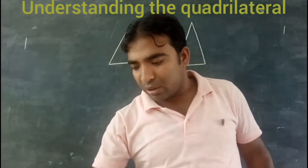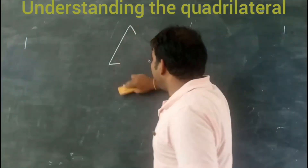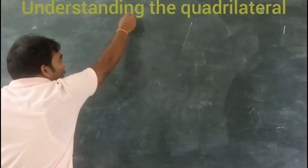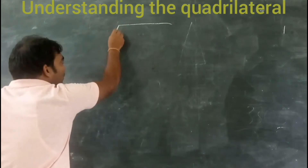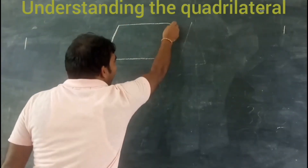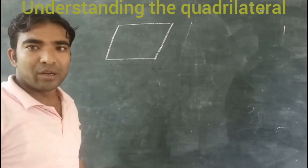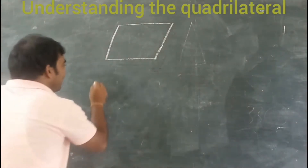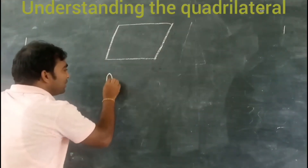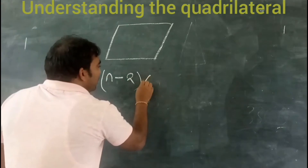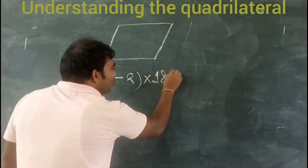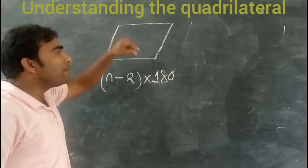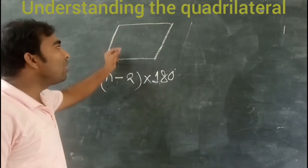Now, one important thing to remember: for any polygon, what will be the angle sum property — whether it is regular or irregular — we have to remember the formula, that is (n − 2) × 180 degrees. Here, n stands for the number of sides.